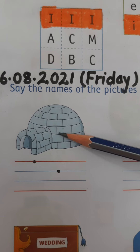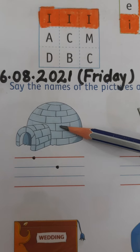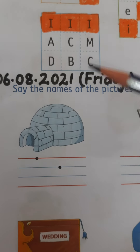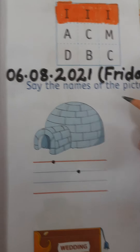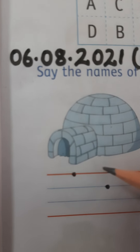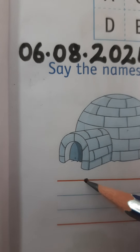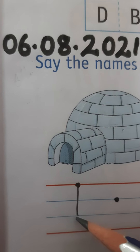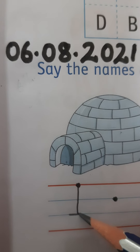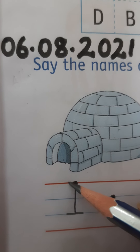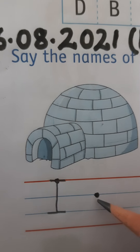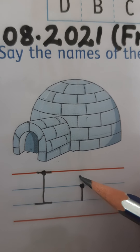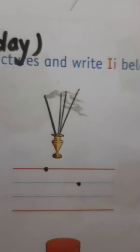What is this children? This is an igloo. Baraf ki ghar ko kya bolte hain? Igloo. So I is for igloo — we have to write capital I first. Aap achche se banayenge — capital I and small i banana bahut easy hai children. Standing line and two sleeping lines makes capital I. And for small i — small standing line and a dot.